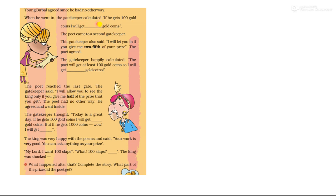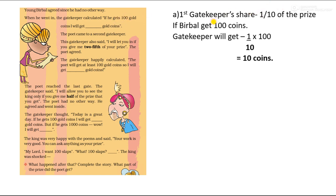When Birbal went in, the gatekeeper calculated: if Birbal gets 100 gold coins, I will get 1 tenth of 100. In the table of 10, 1 tenth of 100 is 10 coins. So the first gatekeeper will get 10 coins.